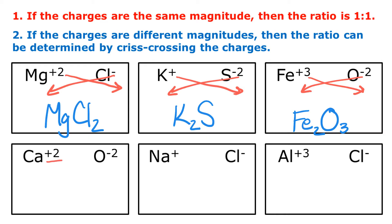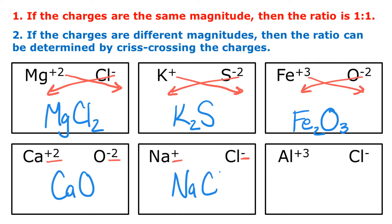Next I have plus two and minus two — calcium with a plus two charge and oxygen with a minus two charge. If they have the same charge, I don't crisscross them. It's not Ca2O2; I just need one of each, so that's CaO. I also have plus one and minus one with sodium and chloride, so I don't need to crisscross those — they cancel each other out and I just need one of each, so sodium chloride is NaCl.